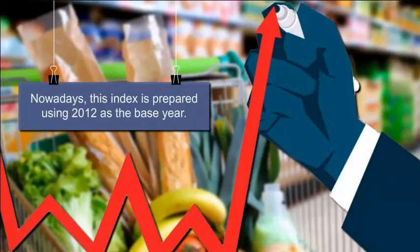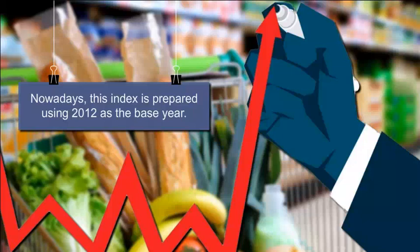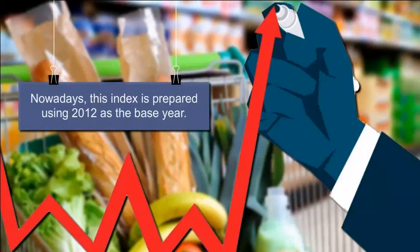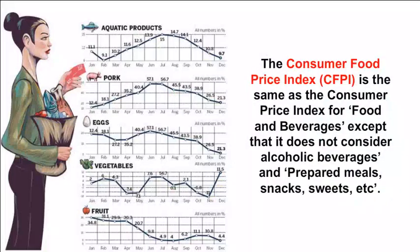Nowadays, this index is prepared using 2012 as the base year. The Consumer Food Price Index is the same as the Consumer Price Index for Food and Beverages, except that it does not consider alcoholic beverages and prepared meals, snacks, sweets, etc.